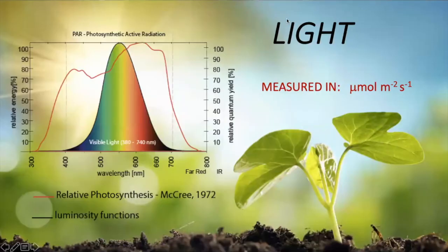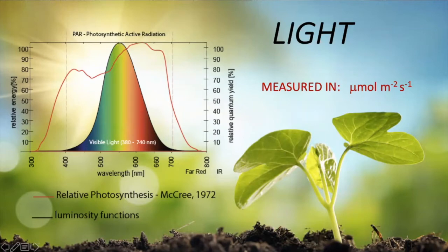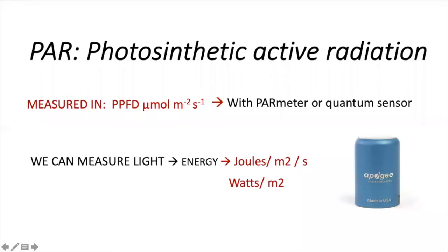When trying to understand how plants use light, we need a specific unit that tells us the amount of light plants use to work. This portion of light goes from 400 to 700 nanometers, and we call this PAR — photosynthetic active radiation. To measure PAR, we use PPFD, photosynthetic photon flux density, and the unit is micromoles per square meter per second. This unit speaks about photons of light. There are specific sensors called quantum sensors that can measure PAR.